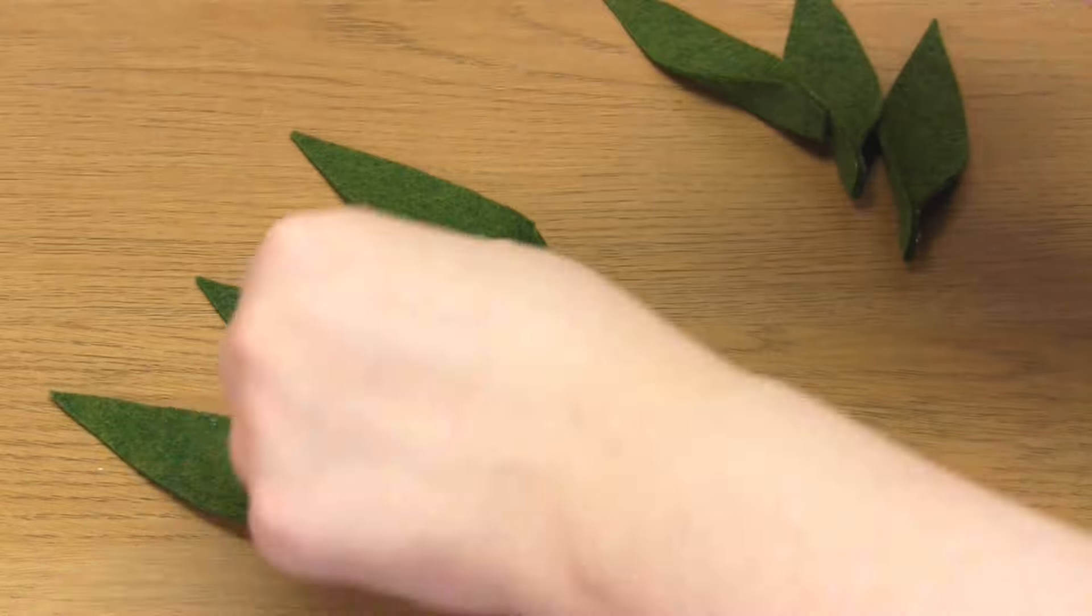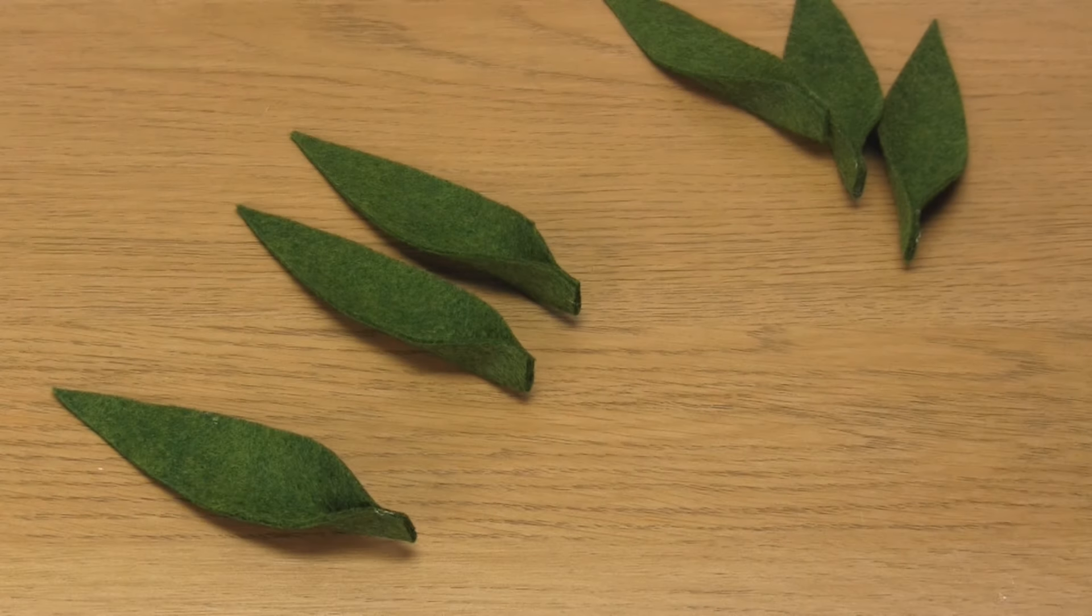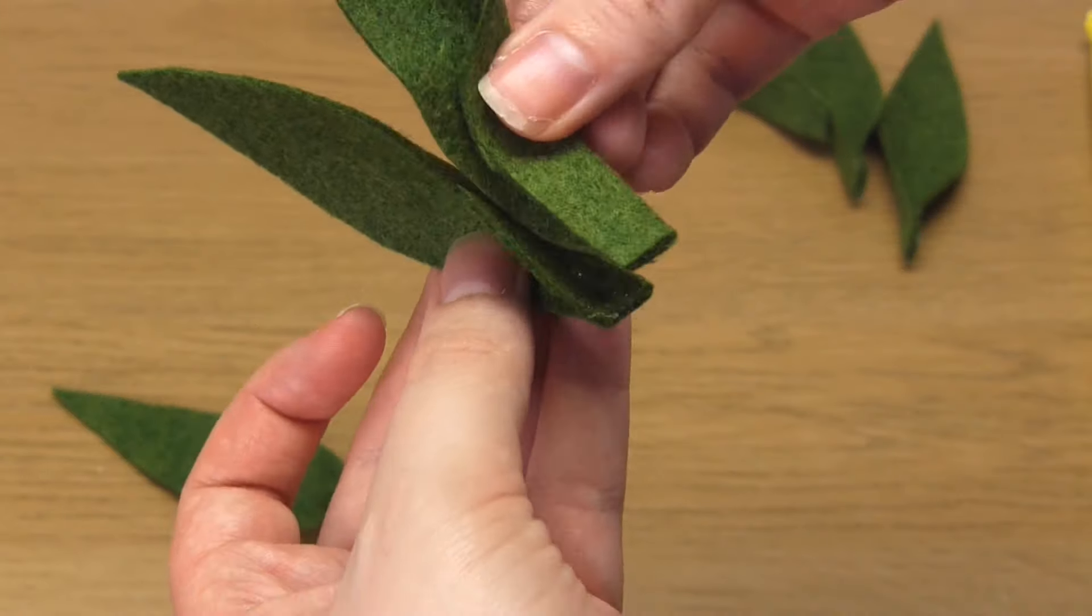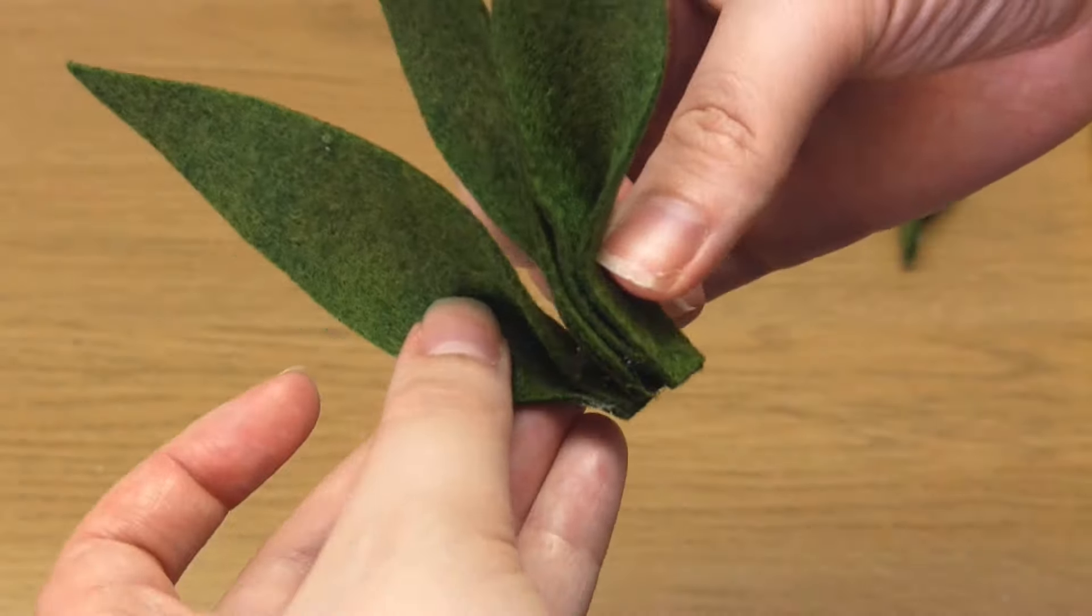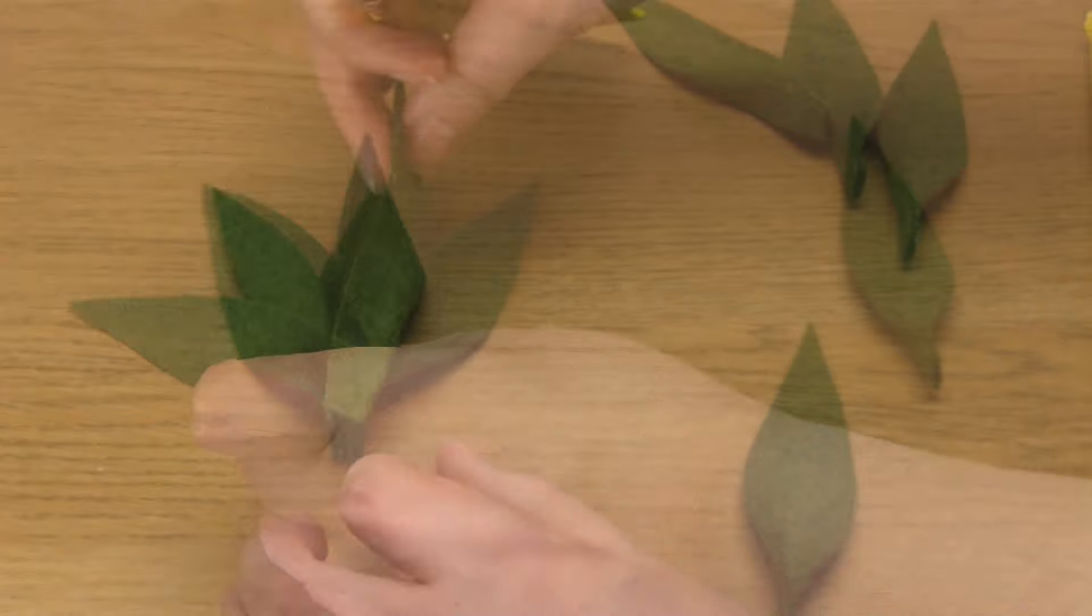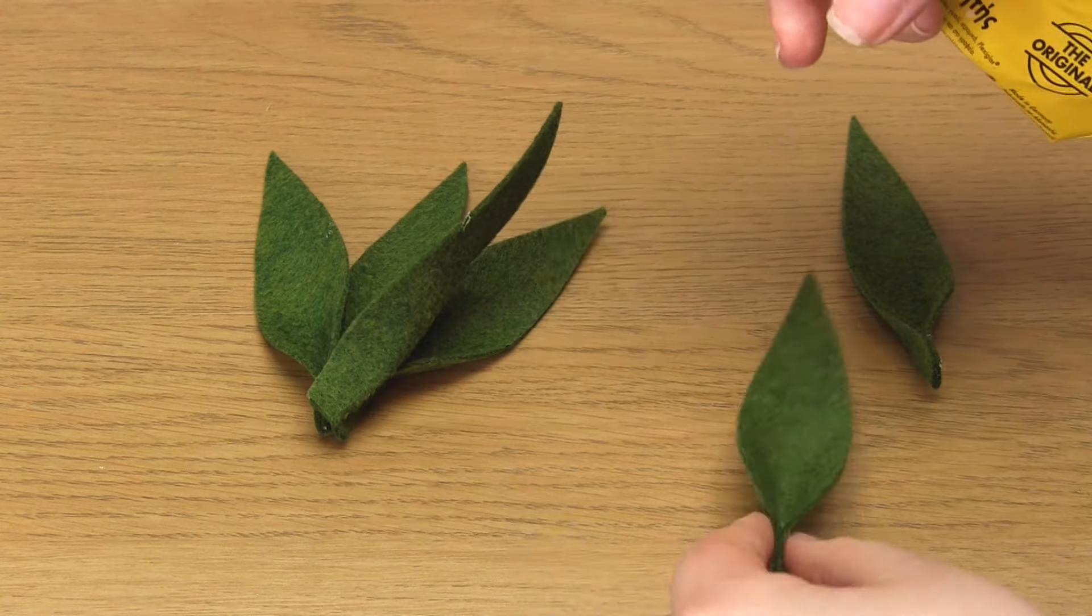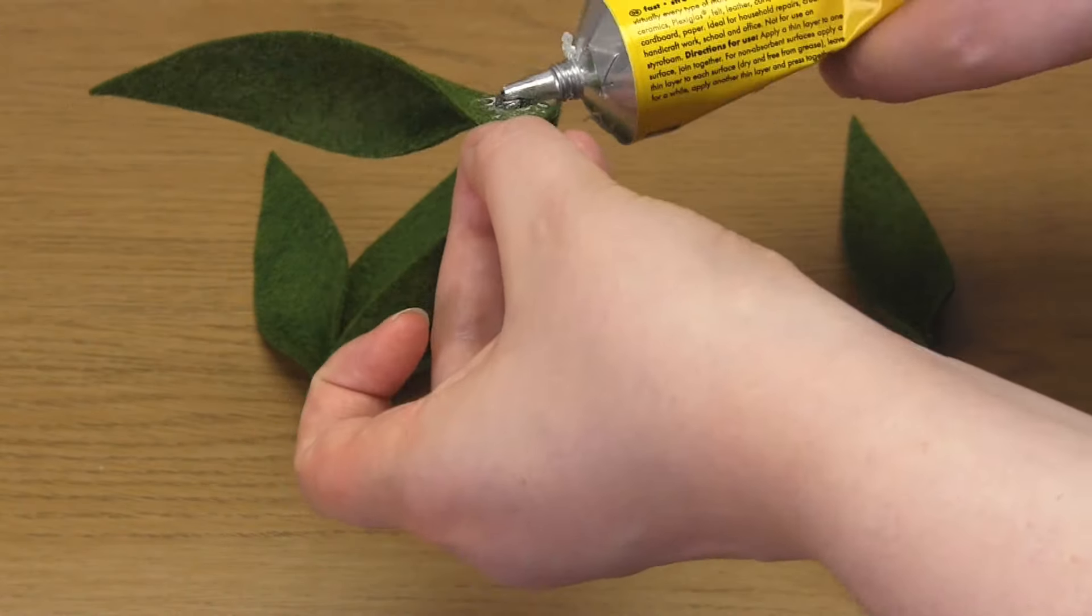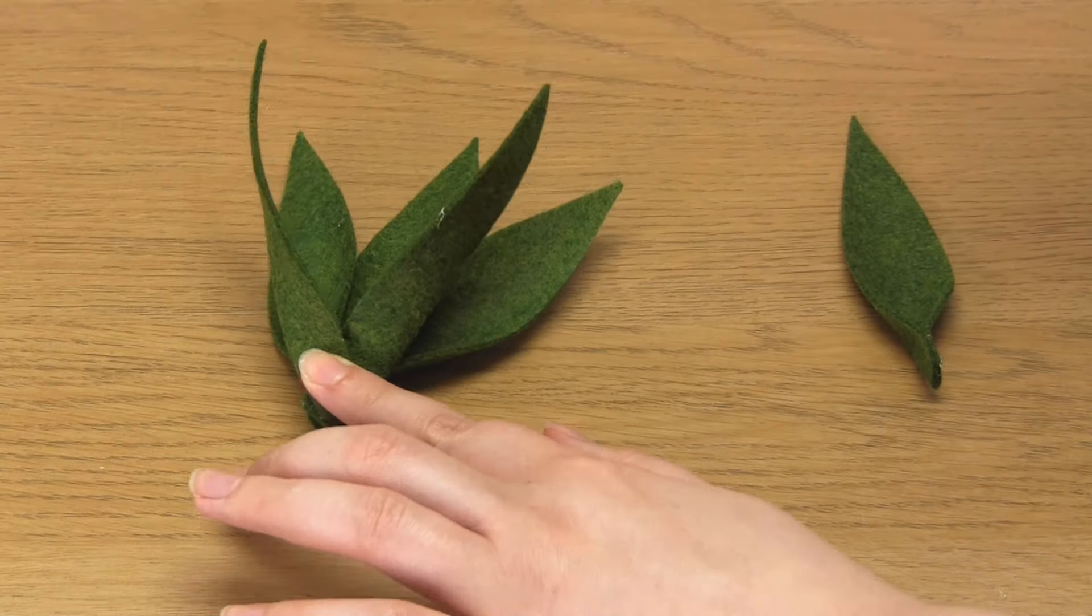Once dry, attach these leaves together at the base. I like to attach three together, side-by-side first. And then add two on top, and then one on the back. Really, it's whatever you think looks good.